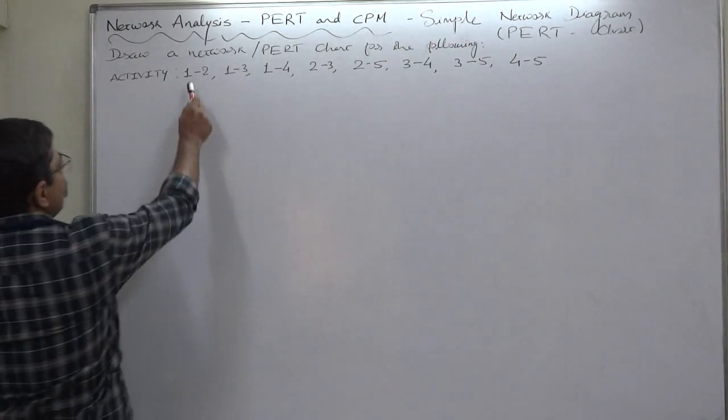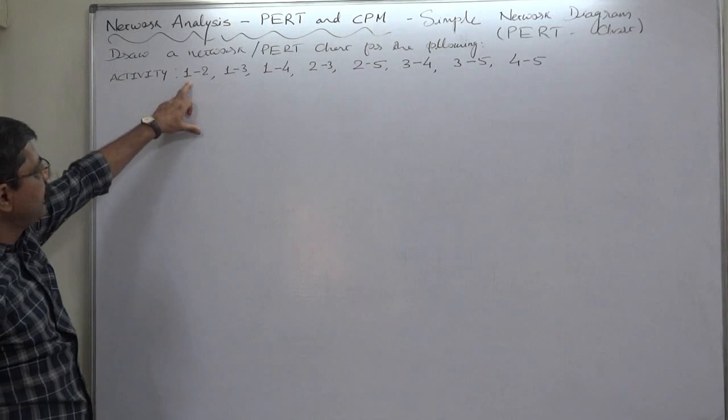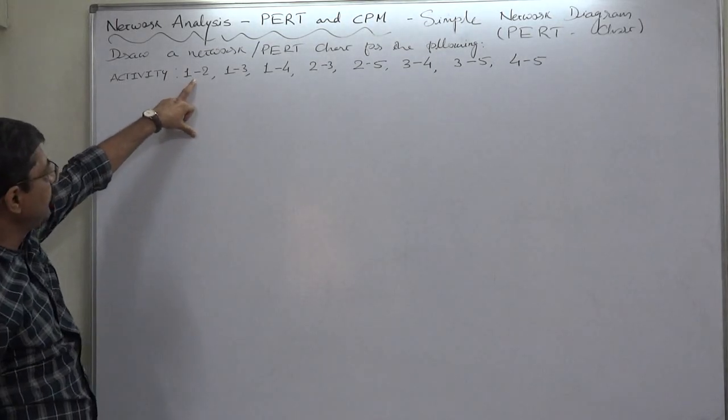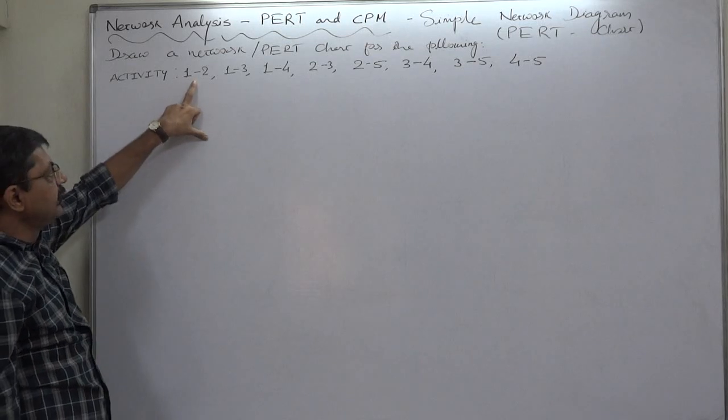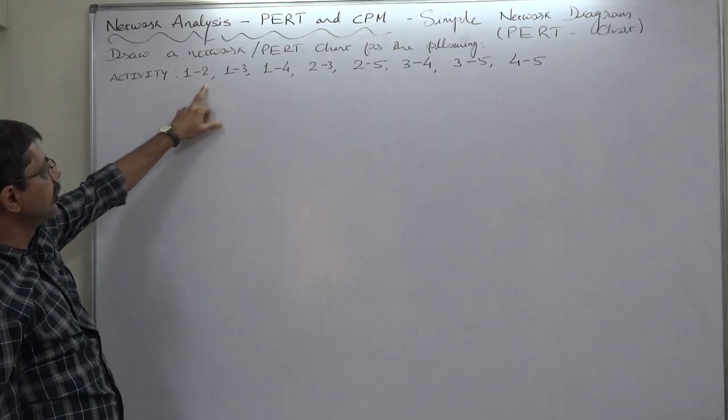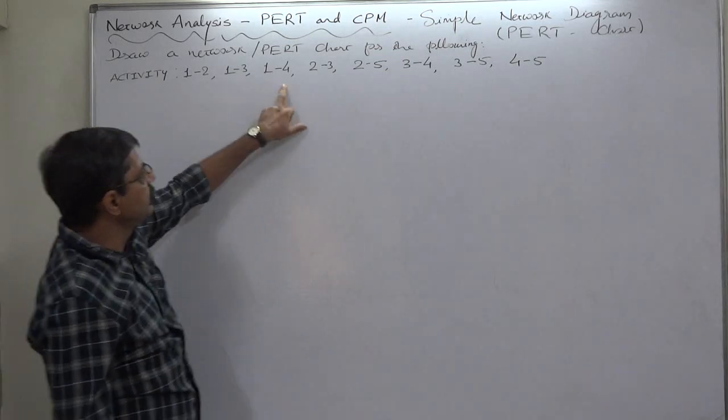See 1-2, 1-3, and 1-4. We know that event number 1 is the start event, and from the start event three different activities start. One is from 1 to 2, another is 1 to 3, and another is 1 to 4.